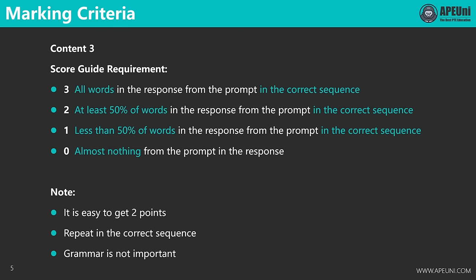Now let's learn about the marking criteria of Repeat Sentence. It is marked in three dimensions: content, fluency, and pronunciation. There are three points in content, five points in fluency, and five points in pronunciation — 13 points in total. From this allocation, we should know that fluency and pronunciation are worth much more than content, so we have to do well in both.